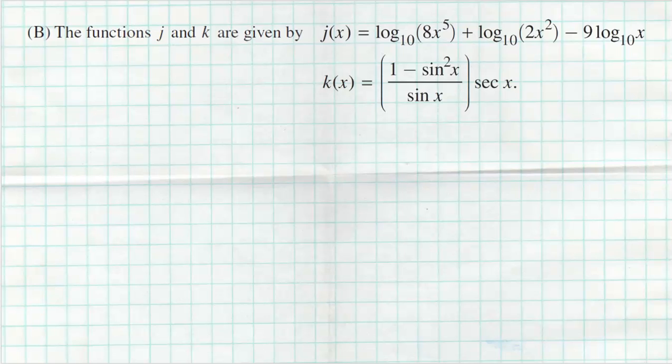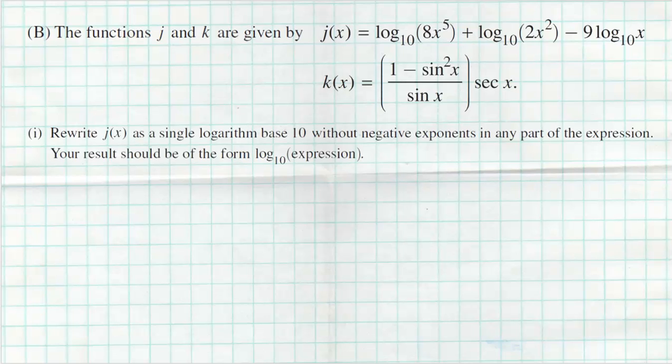Moving on to section B, we're given two more functions j and k. j is a logarithmic function with multiple logs of base 10, and k is a trigonometric function. Part one says to rewrite j of x as a single logarithm of base 10 without negative exponents. I'll combine all of these logs together using our log rules.